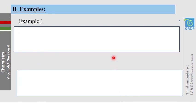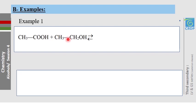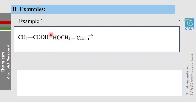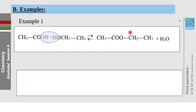Application exercise 1 involves a primary alcohol: ethanoic acid with ethanol. A piece of advice — rearrange the alcohol so that OH is on the right side. It is still ethanol, nothing has changed, only the orientation. Then OH with H gives H₂O, and the remaining parts connect together to give the ester.